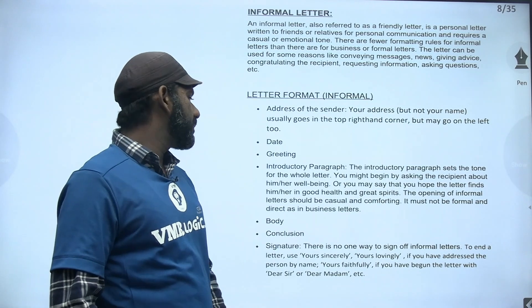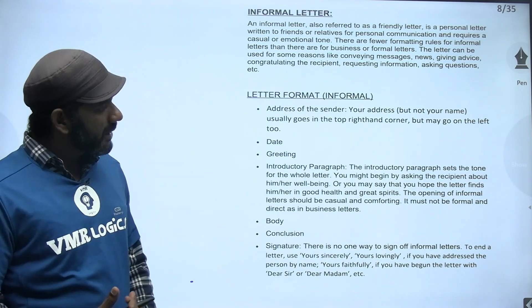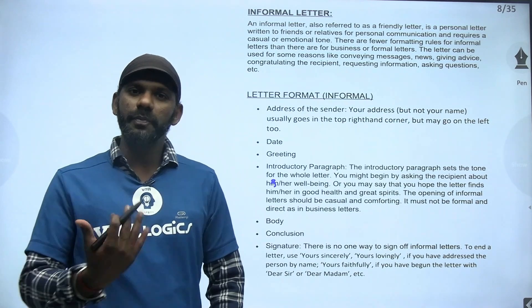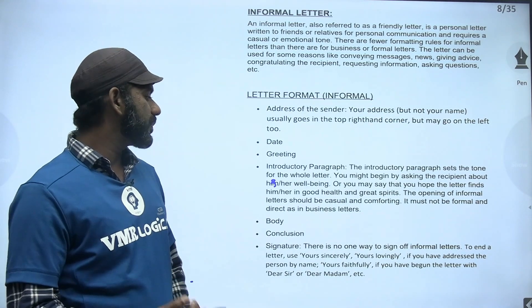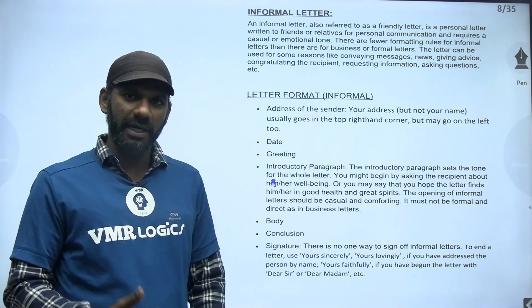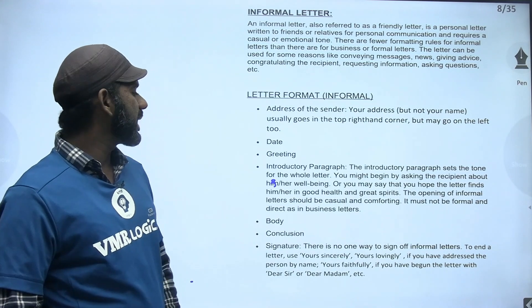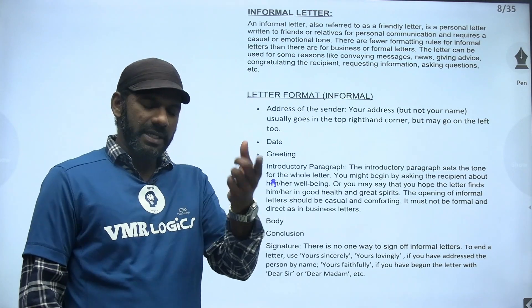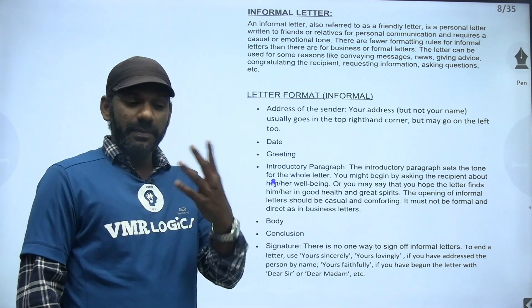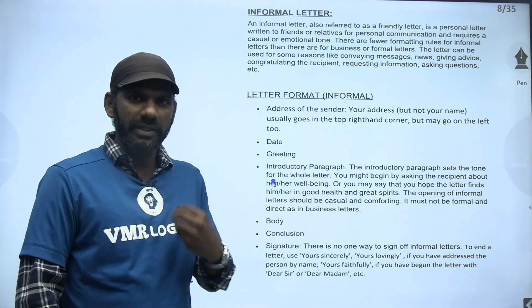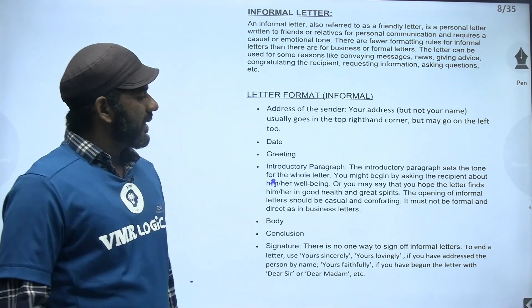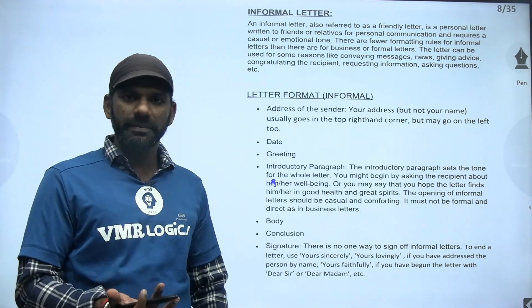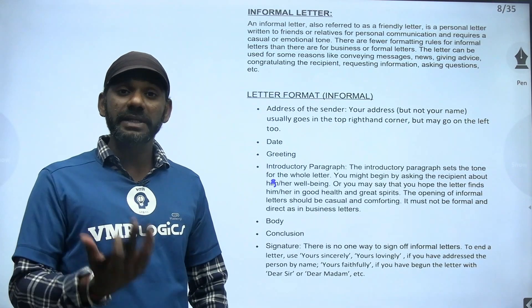You might begin by asking the recipient about his or her well-being — 'How are you?' — or say that you hope the letter finds him or her in good health and great spirits. The opening of informal letters should be casual and comforting — it should be pleasing. If someone asks how I am, I feel happy because they're concerned about my well-being. So the opening should be casual and comforting.